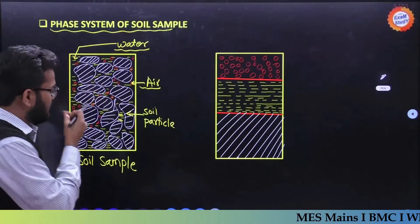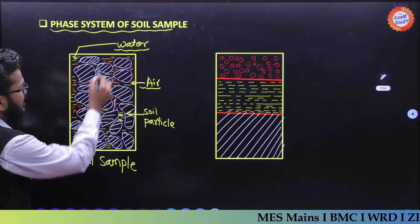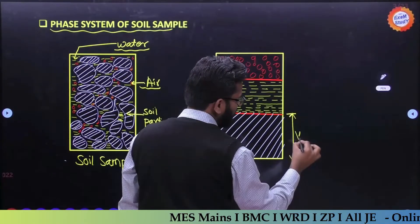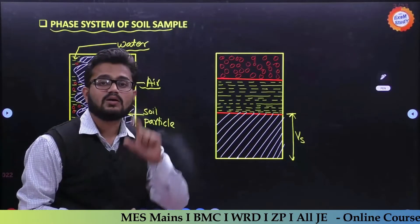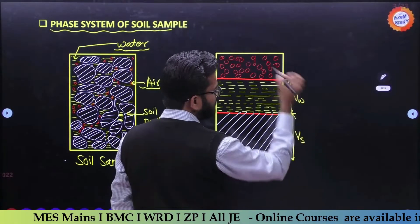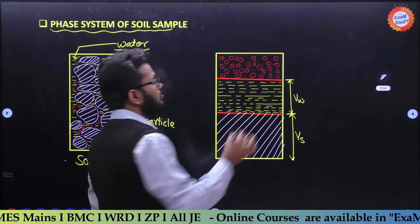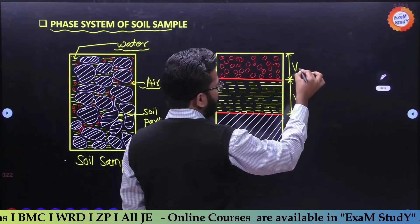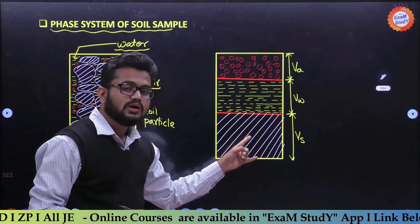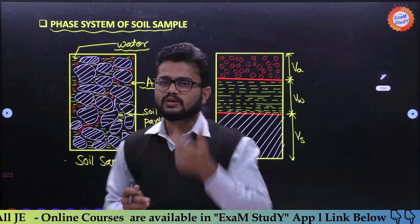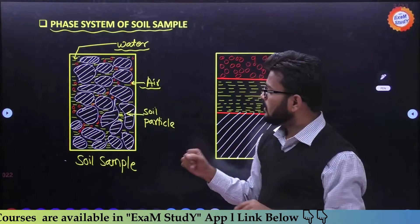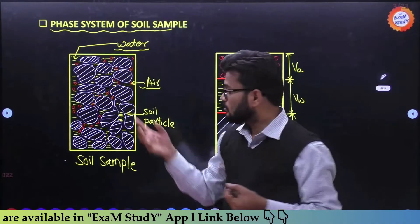In the diagrammatic representation, the volume of soil particles is denoted by Vs (V subscript S). The volume of water present in the soil sample is denoted by Vw (V subscript W). The volume of air present is denoted by Va (V subscript A). So Va is volume of air, Vw is volume of water, and Vs is volume of soil particles.